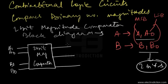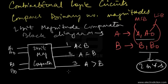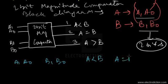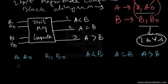Terminal one represents the condition where A is less than B. Terminal two represents the condition where A equals B. Terminal three represents the condition where A is greater than B. Let's consider a truth table with columns A1, A0, B1, B0, and outputs for A<B, A=B, and A>B. For example, where A is 00 and B is 01, B is obviously greater than A.